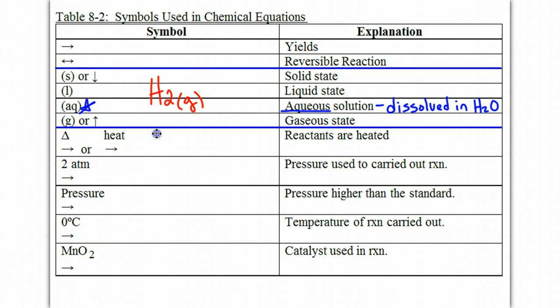At the bottom here, these are things that you will find written above the arrow which indicates a circumstance necessary for the reaction to be carried out. For example, if you see a triangle or heat written above the arrow, then heat is required for the reactants to react. If you see two atmospheres or a certain pressure written above the arrow, then this indicates the pressure that's necessary in order to carry out the reaction. You may see a specific temperature written above the arrow.